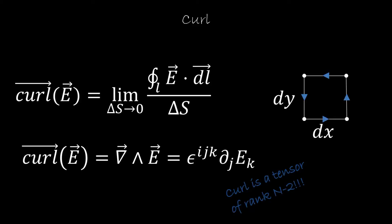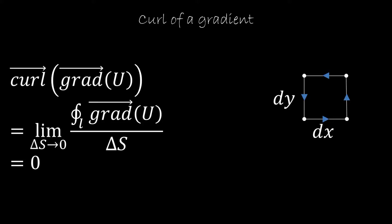The gradient of a scalar field is a vector field, so we ask ourselves: what is the curl of a gradient? The curl is an infinitesimal closed line integral, and we saw that the closed line integral of a gradient is zero, no matter the line and no matter the field. So the curl of the gradient is zero.